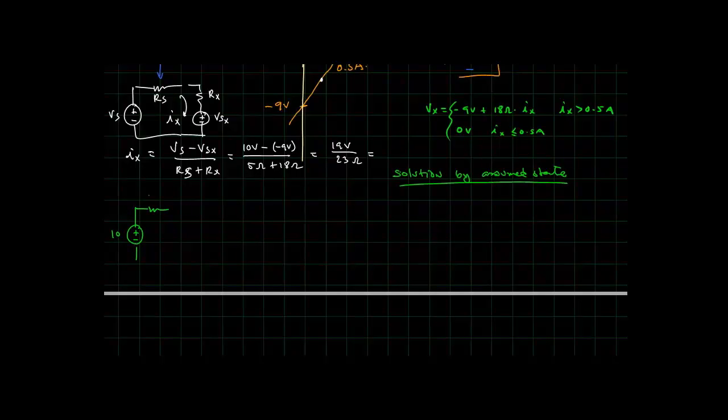Let's solve the above circuit here, where we say we have 10 volts, we have 5 ohms, and now I'm trying to find out what is the current flowing. I either have this resistance here, Rx, is going to be 0 ohms if Ix is less than 0.5, or it will be 18 ohms if Ix is greater than 0.5. Similarly, Vsx is going to be equal to 0 volts if Ix is less than or equal to 0.5 amps, and it will be minus 9 volts if Ix is greater than 0.5 amps.